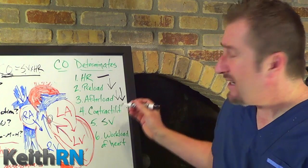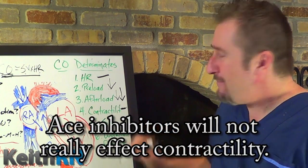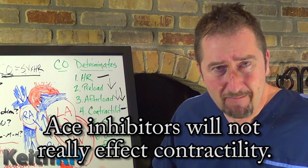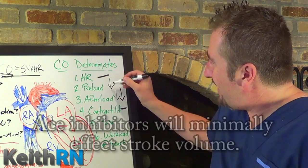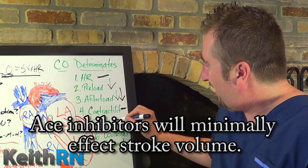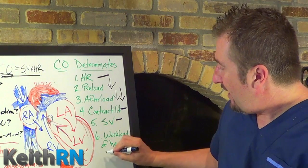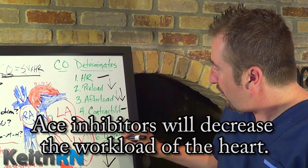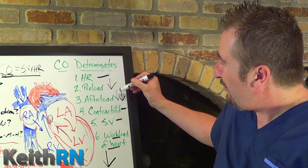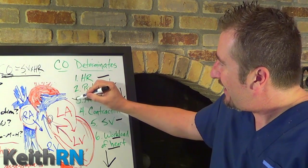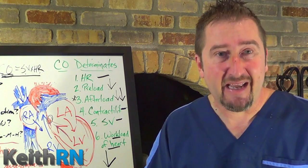Does an ACE inhibitor affect contractility? Really not so much — there is no obvious impact to contractility. Stroke volume is going to be impacted slightly by the decreased preload, but it is minimal. Overall, an ACE inhibitor decreases the workload of the heart by lowering preload, but more importantly its primary strength is lowering afterload through venous and arterial dilation.